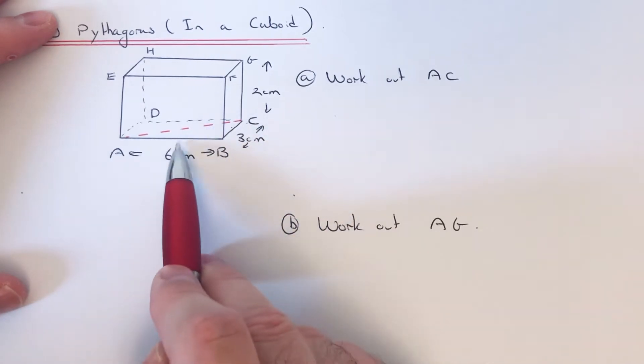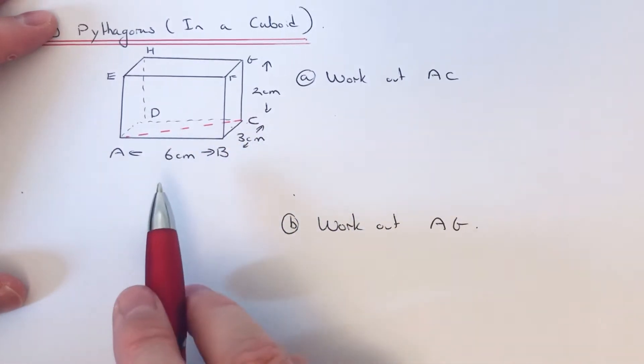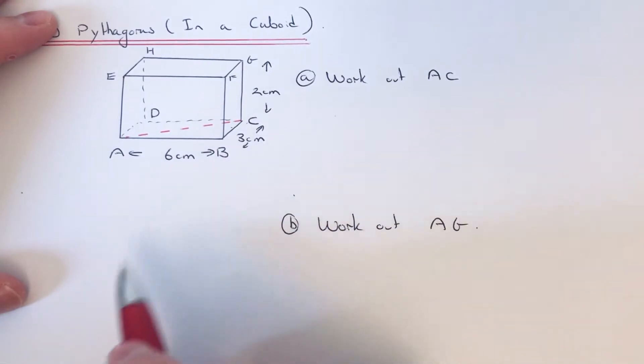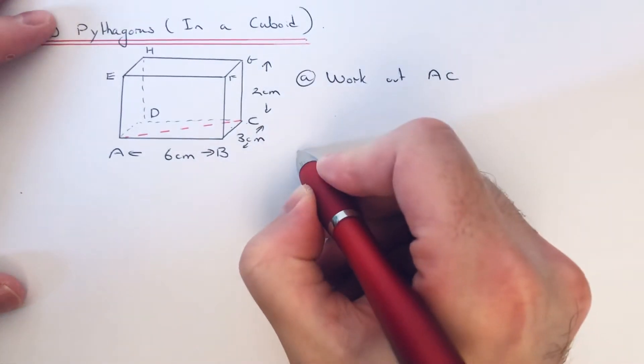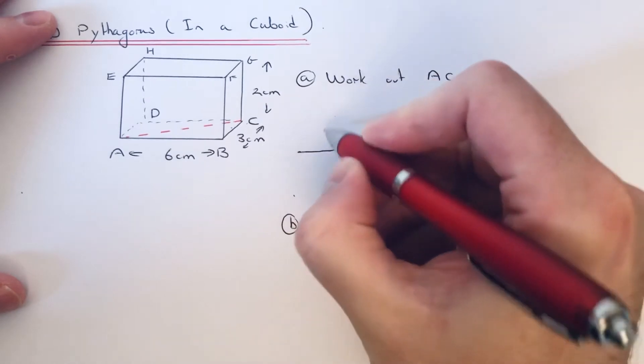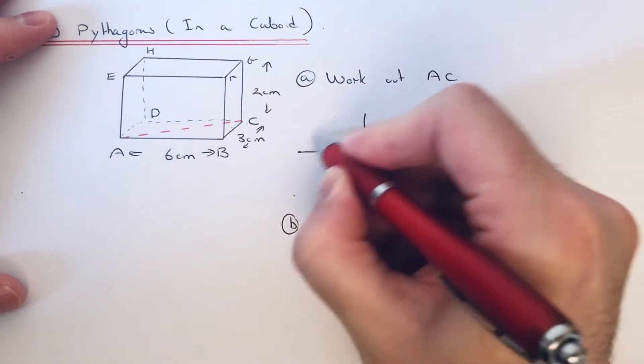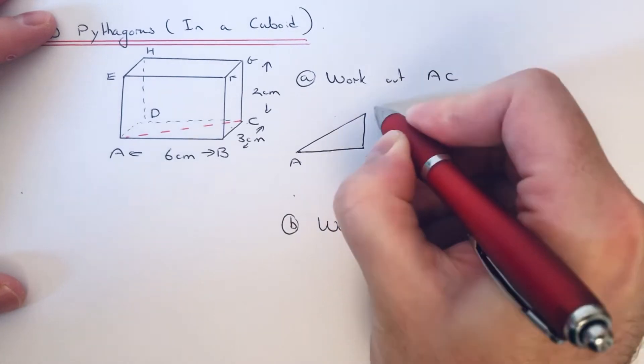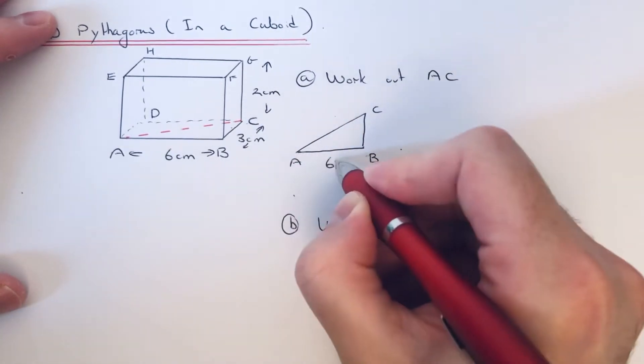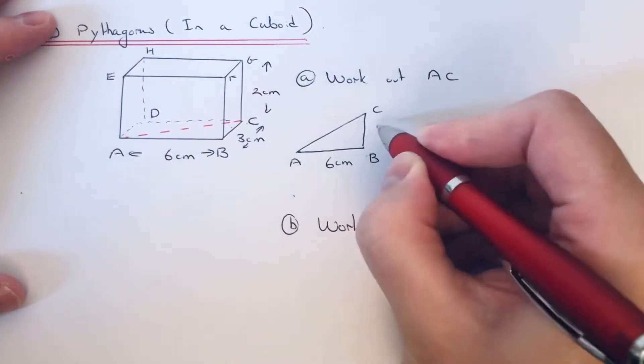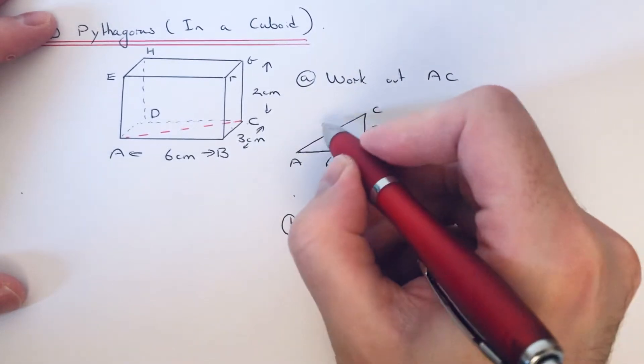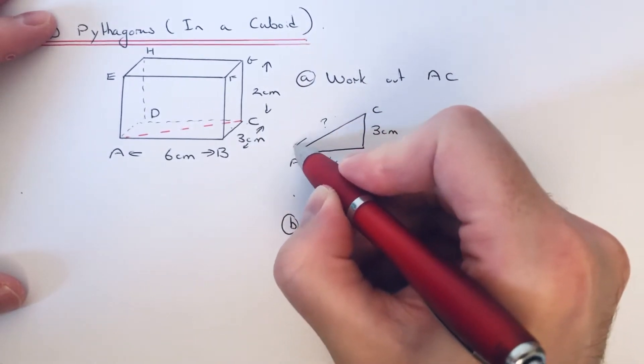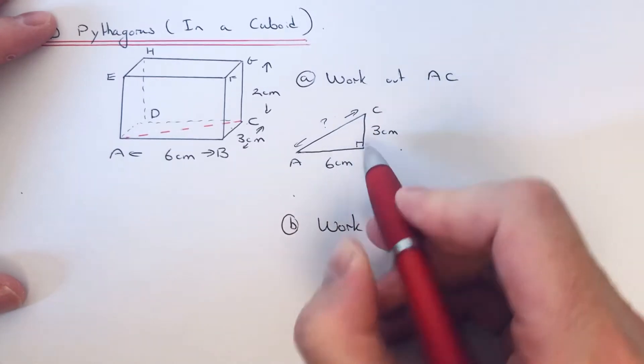The reason why I'm using this one is because I've got two sides of the right-angle triangle which is 6 and 3. I'm just going to draw out the right-angle triangle which makes it easier to do. So we've got A to B which is 6, we've got B to C which is 3, and we're working out A to C.